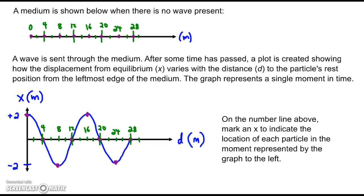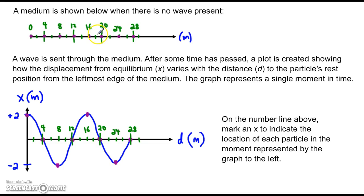A medium is shown below when there is no wave present. These purple dots represent the particles in the medium. Right now there's no wave present, so what we're looking at here are the resting positions of each particle. We're counting up 0, 4, 8, 12, and so forth — so 20, that's how far this rest position is from the left edge. We could call it the distance d from the left edge to the rest position.